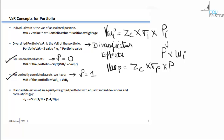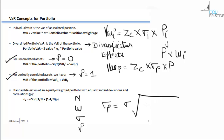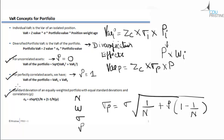The standard deviation for an equally weighted portfolio with equal standard deviations and correlation is given by a specific formula. Assuming there are N assets in a portfolio, all with the same weight W, the same standard deviation Sigma, and the same correlation Rho, the standard deviation of the portfolio is: Sigma_P equals Sigma multiplied by the square root of (1/N plus Rho times (1 minus 1/N)). We will discuss this formula in detail and solve a problem based on it in the coming slides.